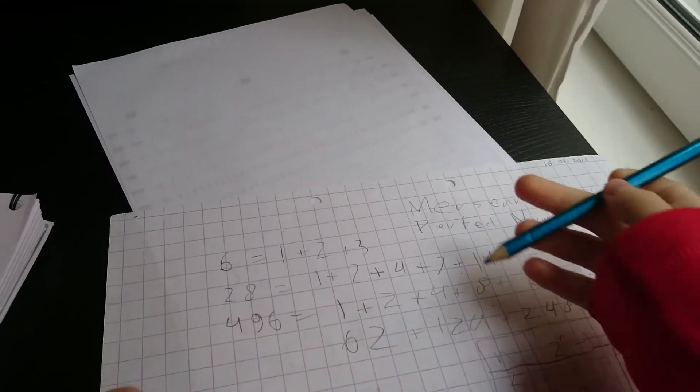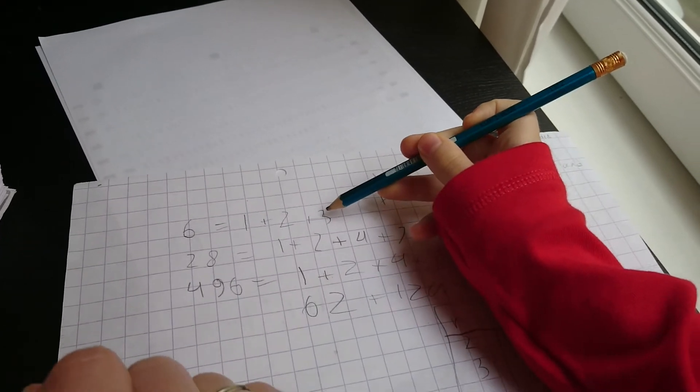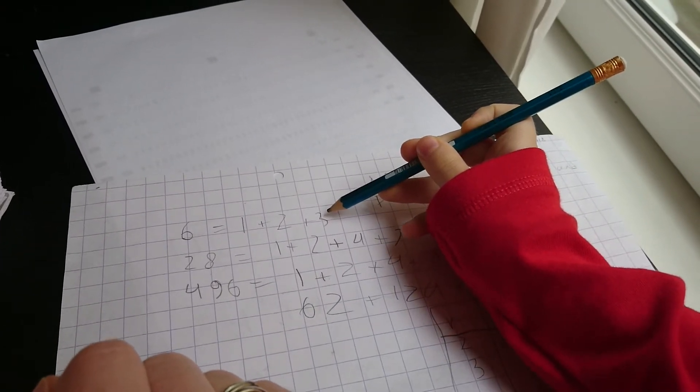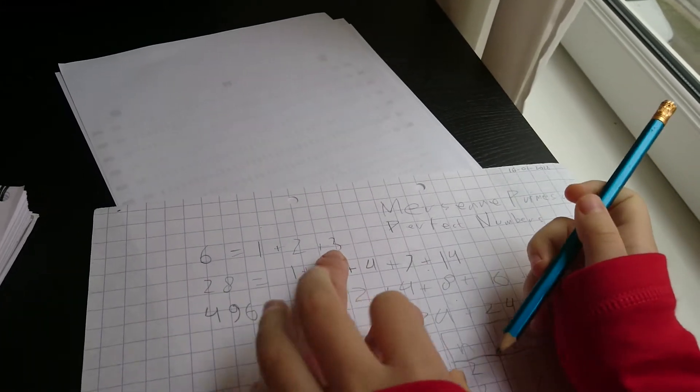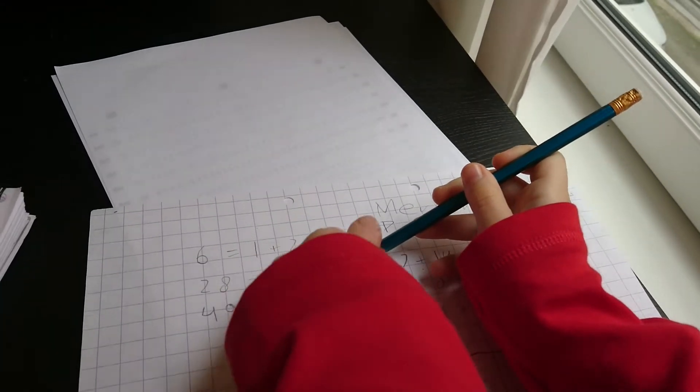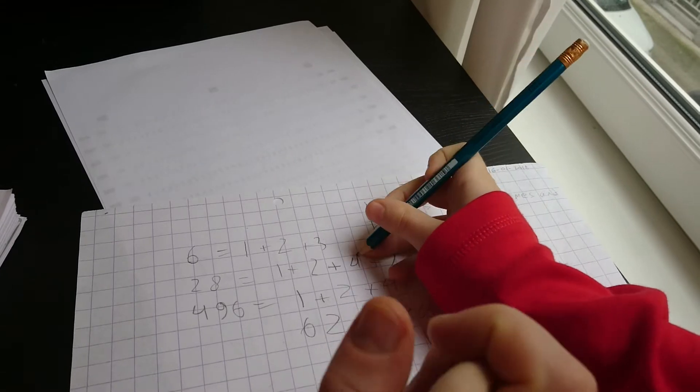But when you get 1 above a Mersenne prime, you switch to the Mersenne prime. Normally, you would get 4 here, but you write 3, because 3 is a prime number.